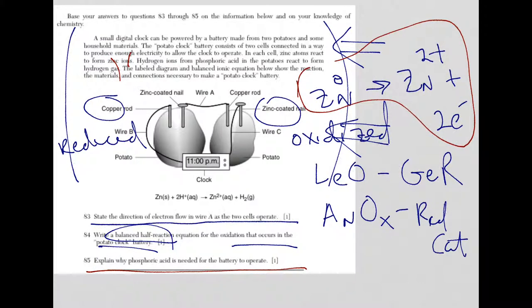Well, guess what? If I don't have the phosphoric acid, I don't have ions that are free to move. And if I don't have free-moving ions, the clock for this potato battery clock won't work.